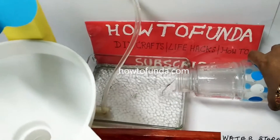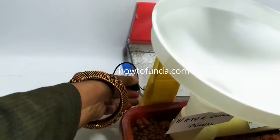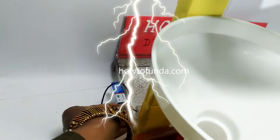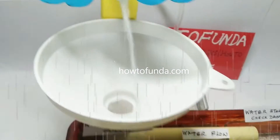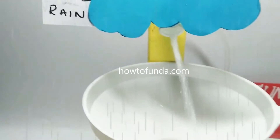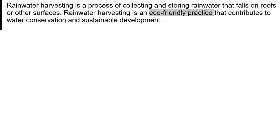Hi friends, welcome back. In this video I will be discussing what rainwater harvesting is all about and the various things involved in it. Rainwater harvesting is a process of collecting water — rainwater — on the roof of a house or any surface or land wherever water is coming from rain resources. When it is collected and stored, we call it rainwater harvesting. It is an eco-friendly practice that contributes to water conservation as well as sustainable development.